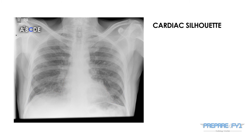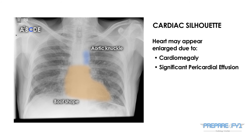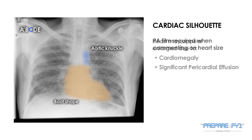C is for cardiac silhouette. Here you can see the boot-shaped cardiac silhouette with the aortic knuckle. The heart may be enlarged in pathologies such as cardiomegaly or significant pericardial effusion. You can only, however, classically talk about the cardiac size in the context of a PA film.